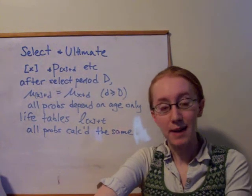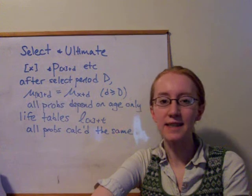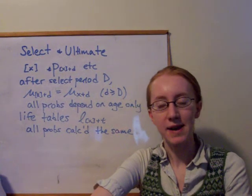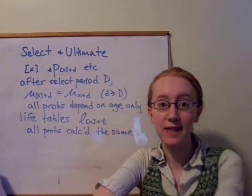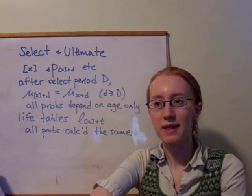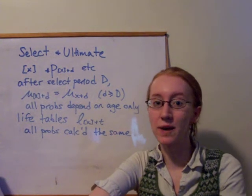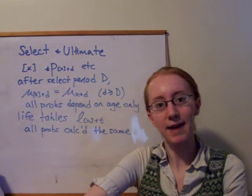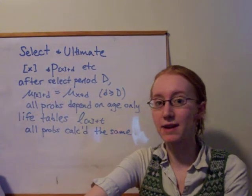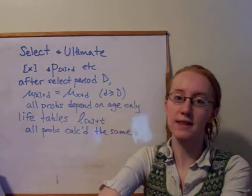But this is known as the temporary selection effect, as I mentioned, because it does tend to wear off after time. Maybe, let's say, ten years after someone buys an insurance policy, their health might have deteriorated. The insurance company doesn't know. So we can say that the selection effect wears off after a certain period. And we call that time after which the selection effect doesn't matter anymore, capital D. That's called the select period.